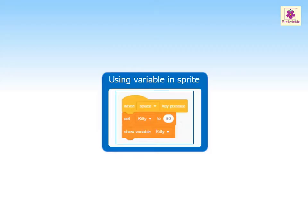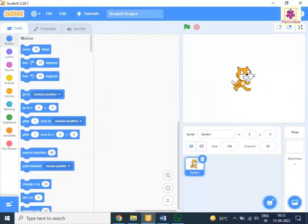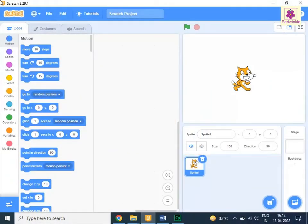After creating the variable, you can use it in your Sprite. Let's learn how to use a variable in Sprite. In the Sprite pane, select the cat sprite.